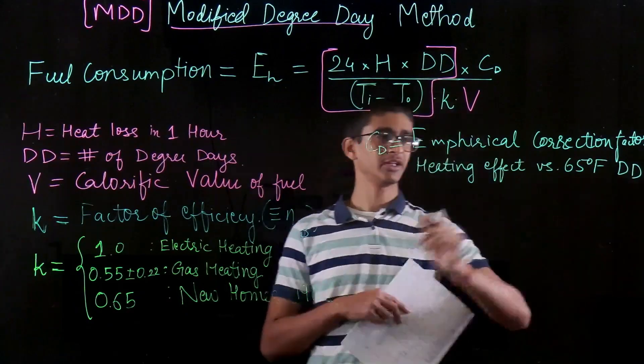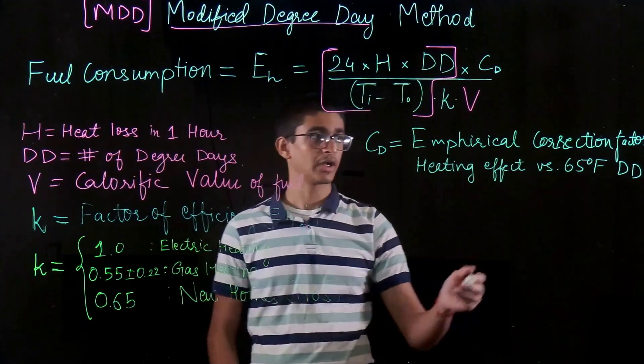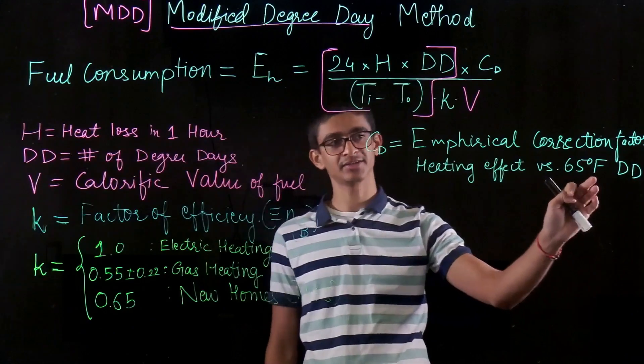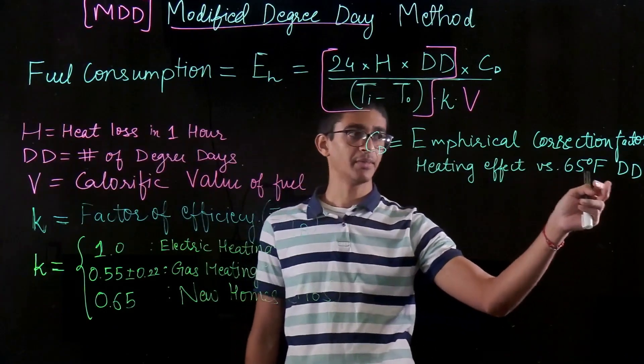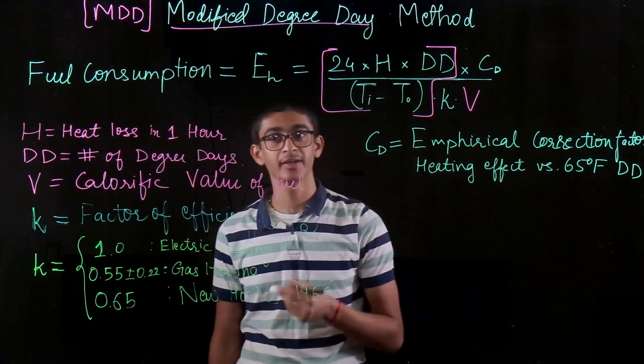So usually the degree days which are recorded in our history are all based on 65 degree Fahrenheit as a balanced temperature. But the balanced temperature can change based on the comfort requirements, the internal heat gains of the building, etc.